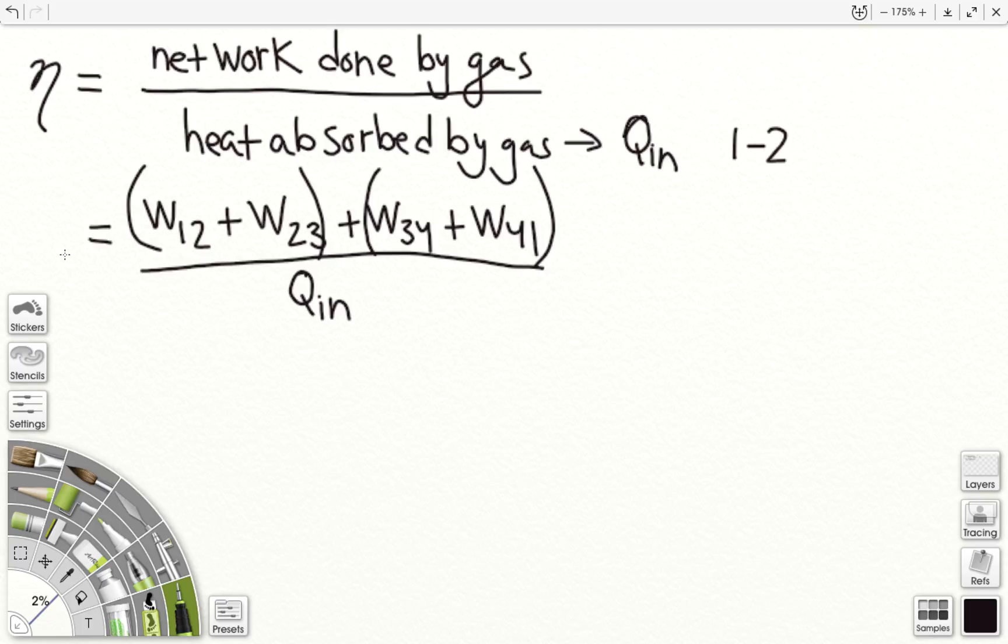So I'm going to go through the steps, the expressions for each of these, and we're going to be simplifying this whole thing down to 1 minus Tc, T cold over T hot.